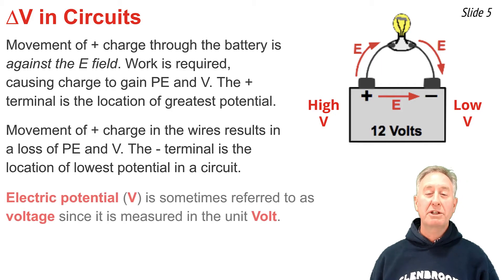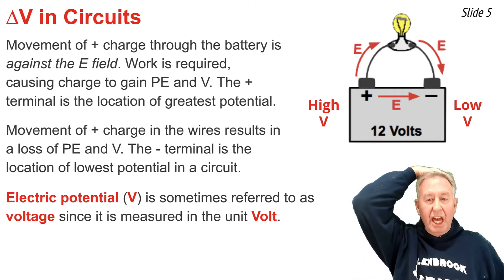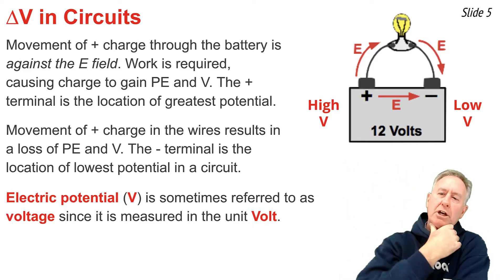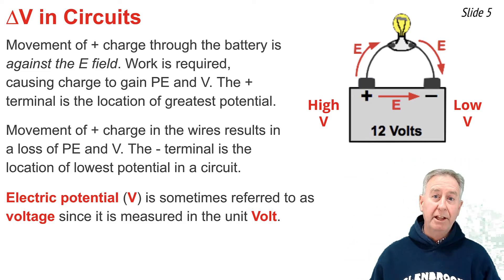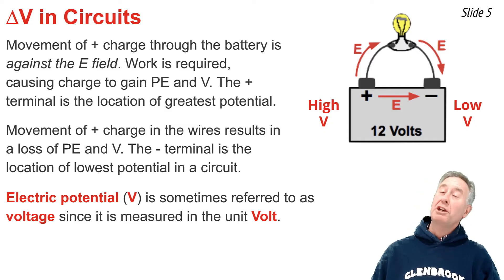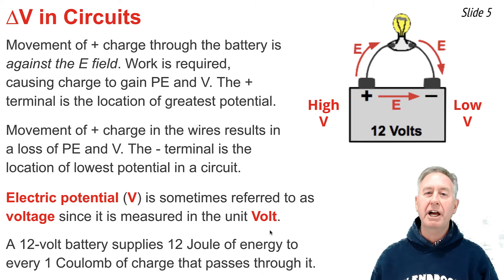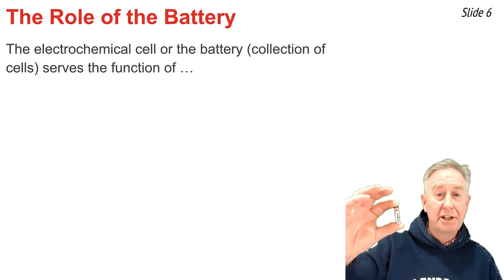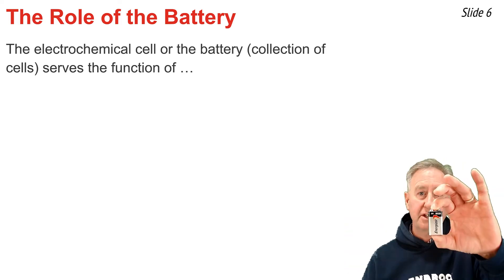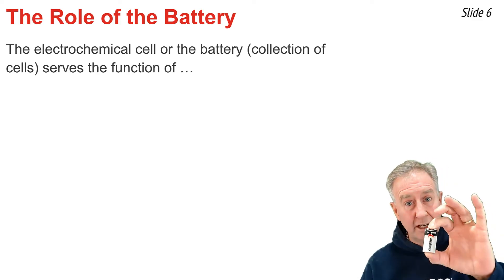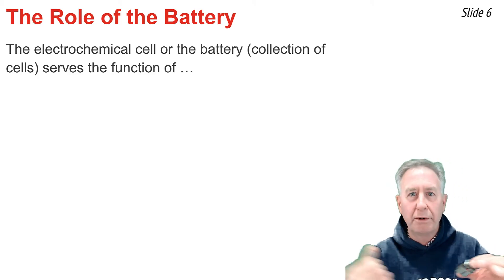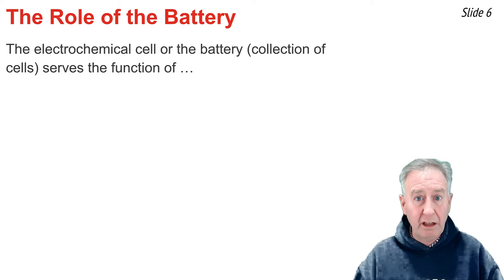Electric potential is sometimes referred to as voltage, since we measure it in the unit volt, named after the famous Italian scientist Alessandro Volta — and I bet his friends probably just called him Alex for short. This unit, volts, is what we use to measure electric potential difference. So when we have a 12-volt battery, that tells us the battery supplies 12 joules of potential energy to every one coulomb of charge that moves from the negative to the positive terminal. Here is an electrochemical cell rated at 1.5 volts, and here is a 9-volt battery — inside of which are six of those 1.5-volt cells strung together. Whether you call it a battery or a cell, it is a source of energy.